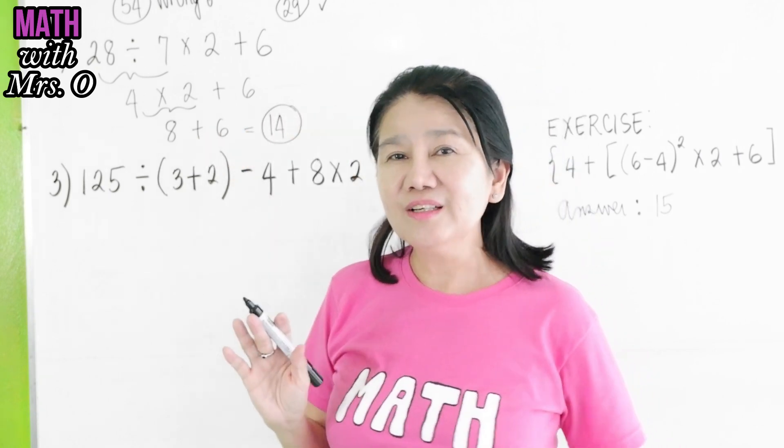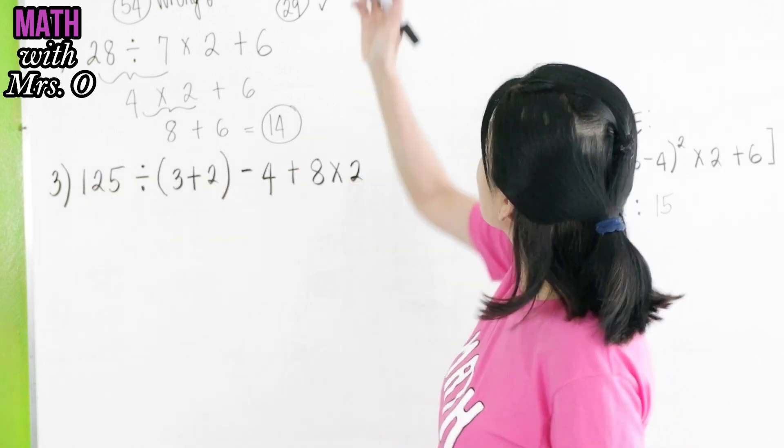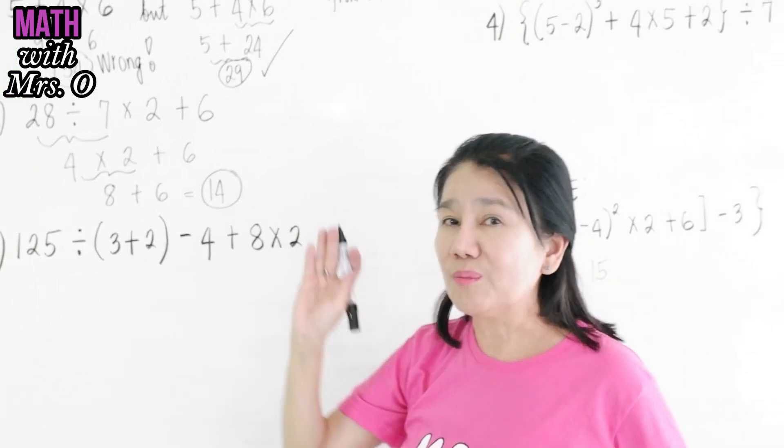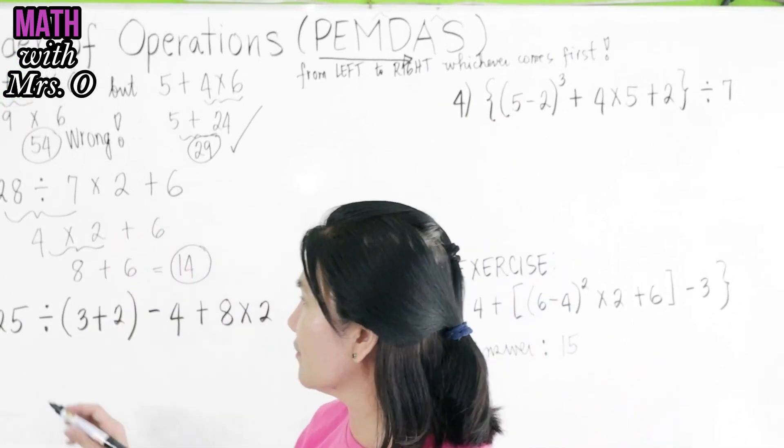There. So, again, from left to right, whichever comes first, you do the MD or the AS. From left to right, whichever comes first.